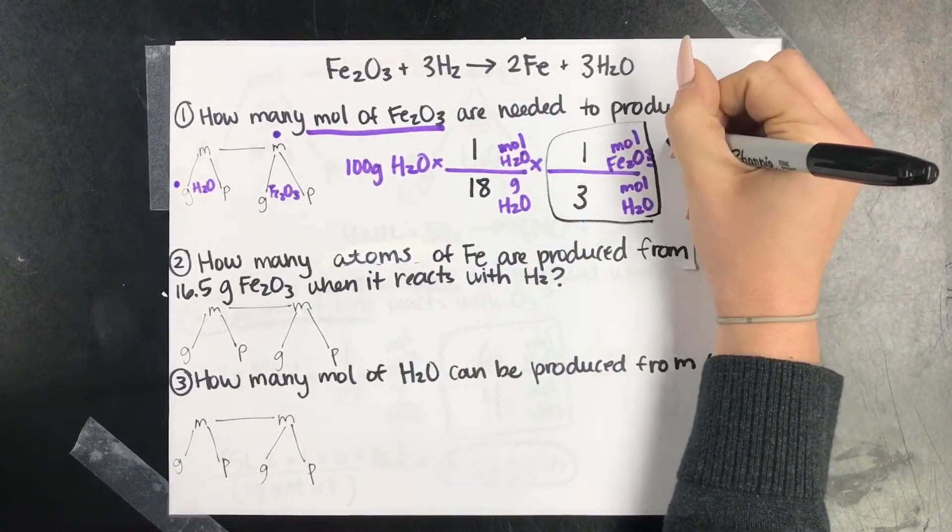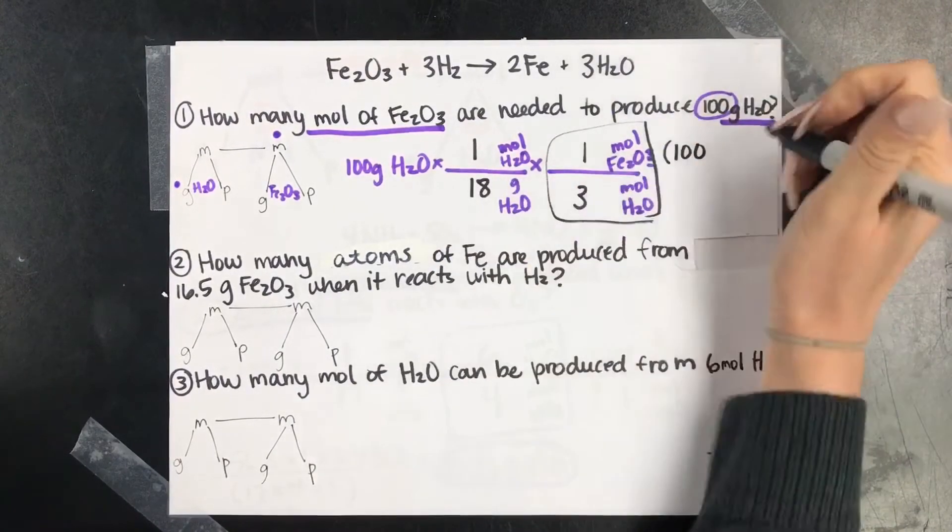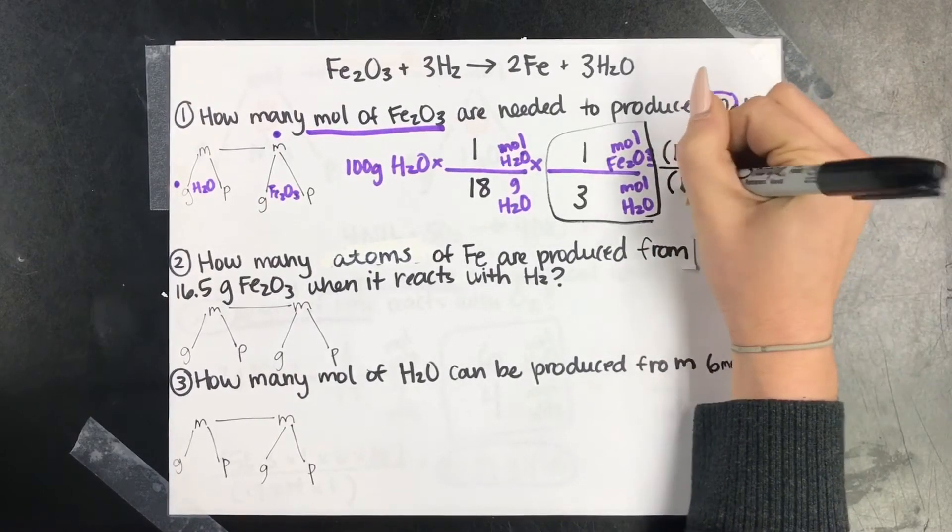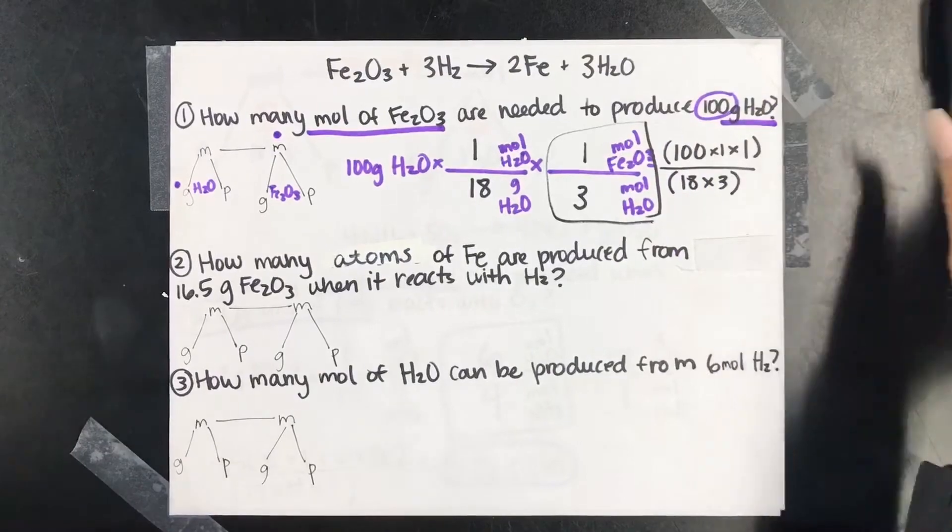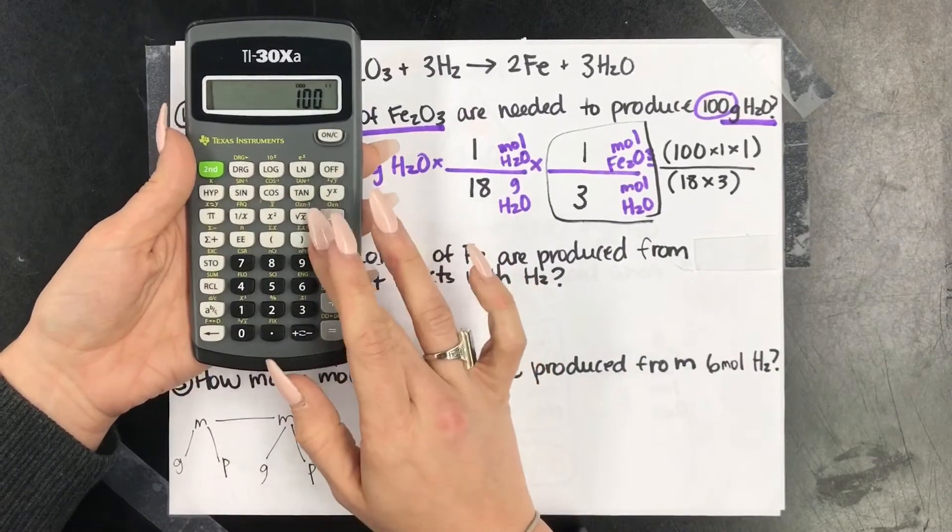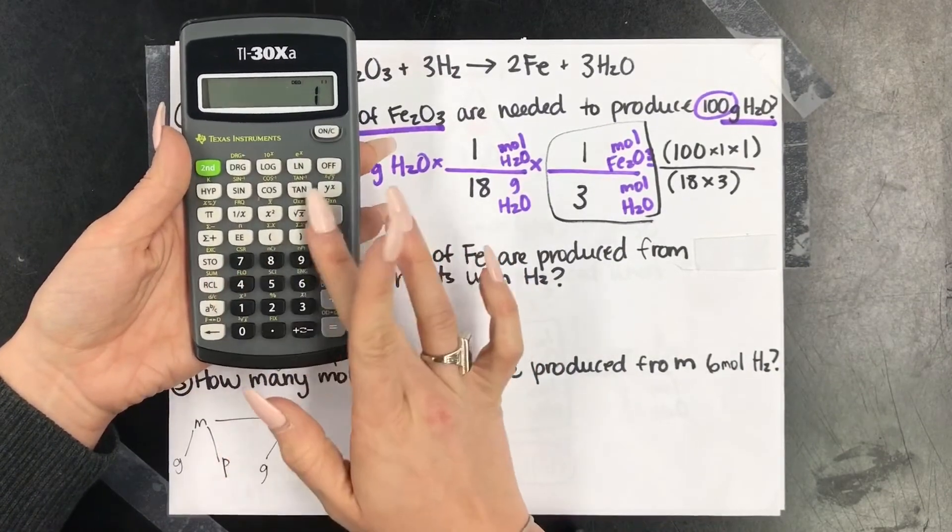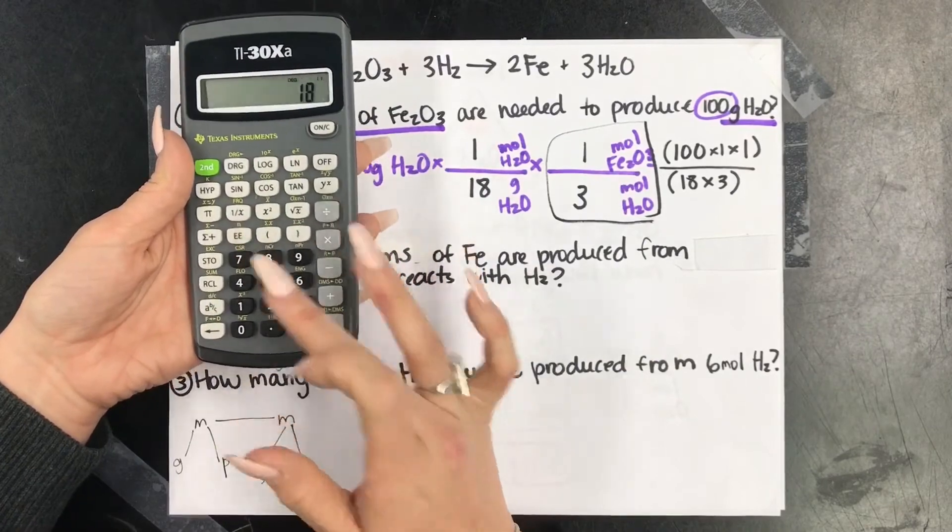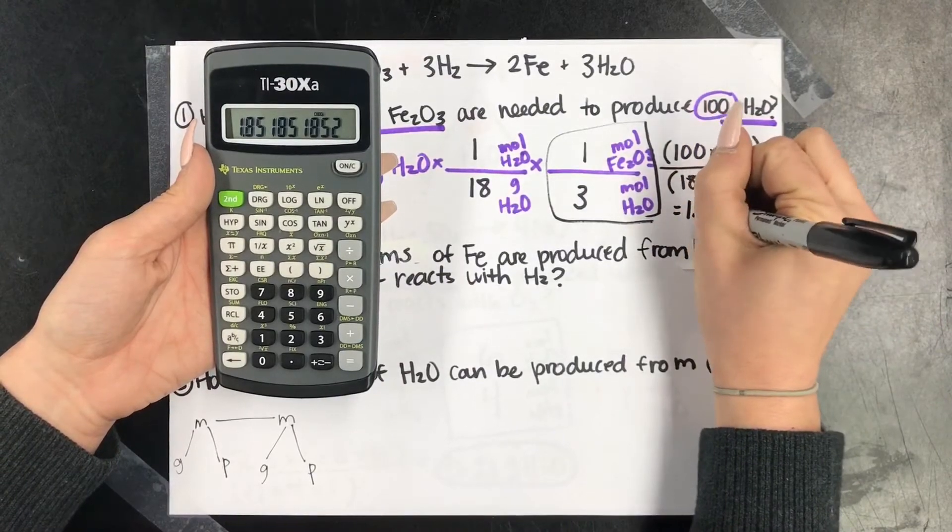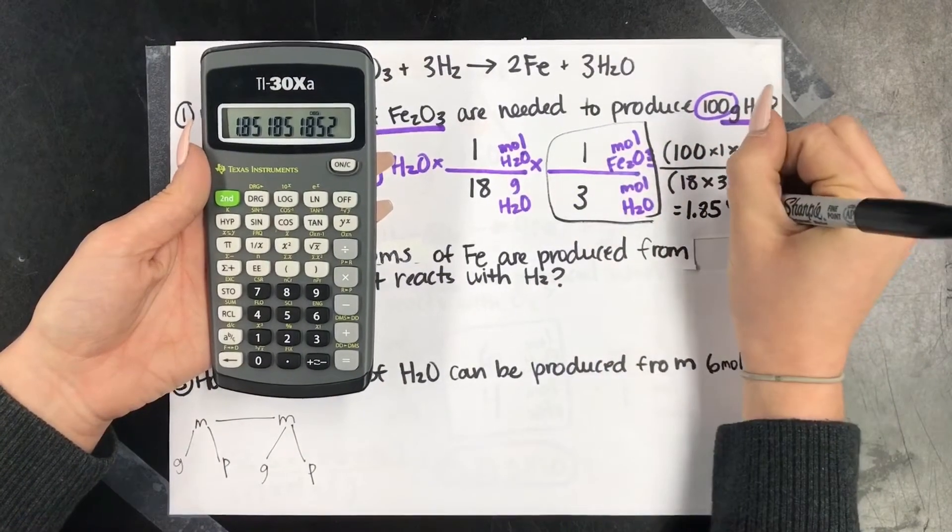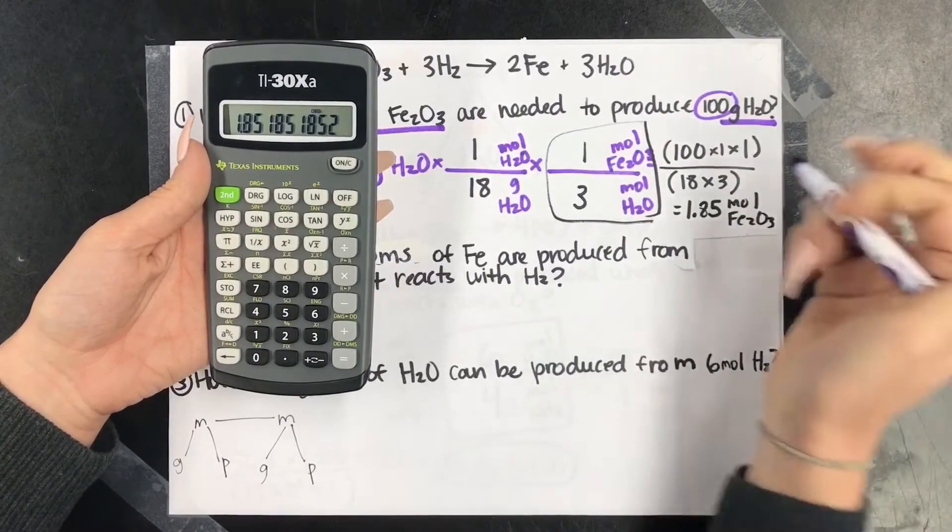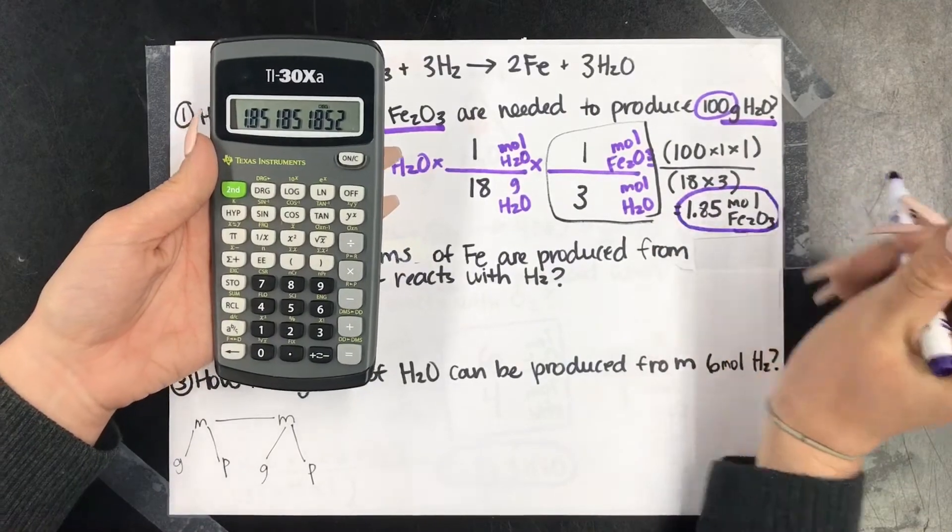Put this in our calculator. Both of these are ones, but I'm just going to put it there just so you can see it. 18 times 3, 100 times 1 times 1, divided by 18 times 3. 1.85 mole Fe2O3.